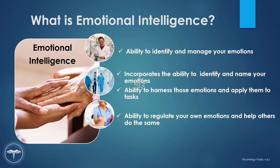Let's start off and discuss what emotional intelligence is. Emotional intelligence refers to the ability to identify and manage your own emotions, as well as the emotions of others. It generally includes a few skills, namely emotional awareness — the ability to identify and name one's emotions, and the ability to harness those emotions and apply them to tasks like thinking and problem-solving. When you have the ability to manage and regulate your own emotions, you will then be able to help others do the same.